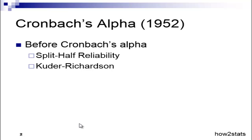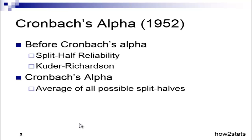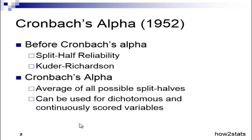There was also a Kuder-Richardson statistic, which you still see around today, and it was used exclusively for items that were scored dichotomously. Cronbach's alpha was much more general than those two because it represented the average of all possible split-halves, and it could also be used for both dichotomous and continuously scored data or variables, and that is arguably one of the reasons why it became so popular.